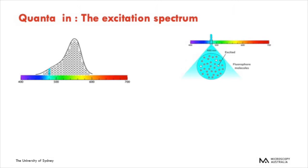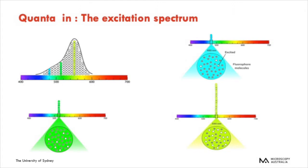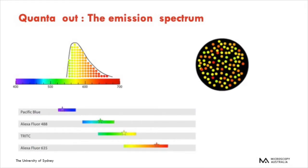Looking at the absorption curve for a specific molecule: if you excite at 480nm, only a few molecules are being excited. If you excite at 500nm, more molecules are excited. And at the maximum of 550nm, the most molecules are absorbing the light. Therefore, you really want to be exciting your molecule at its maximum absorbance, though this may not always be possible depending on the laser lines available to you. Looking at the emission curves of various dyes, they vary greatly. While the emission curve of a particular dye is always exactly the same regardless of where you excite it, different emissions mean we can label specimens with multiple probes and selectively collect the emission.